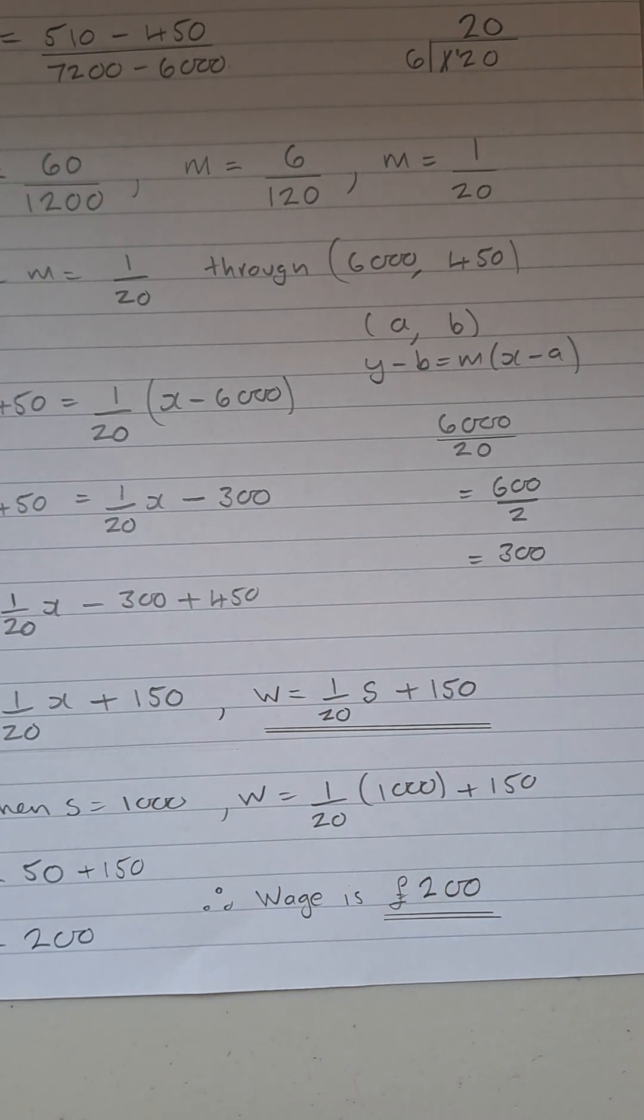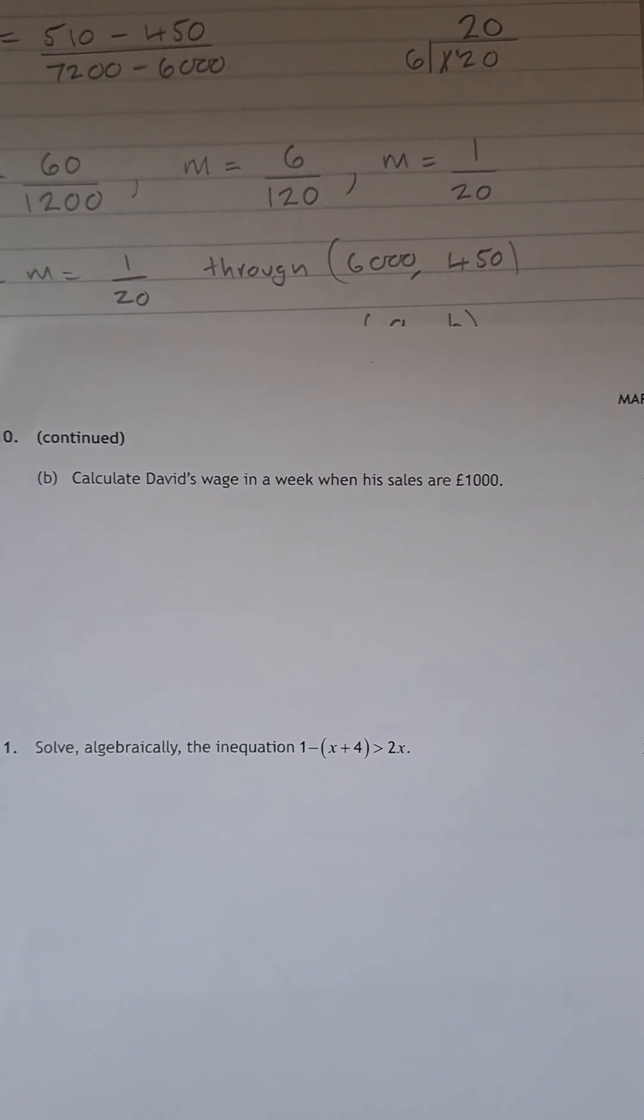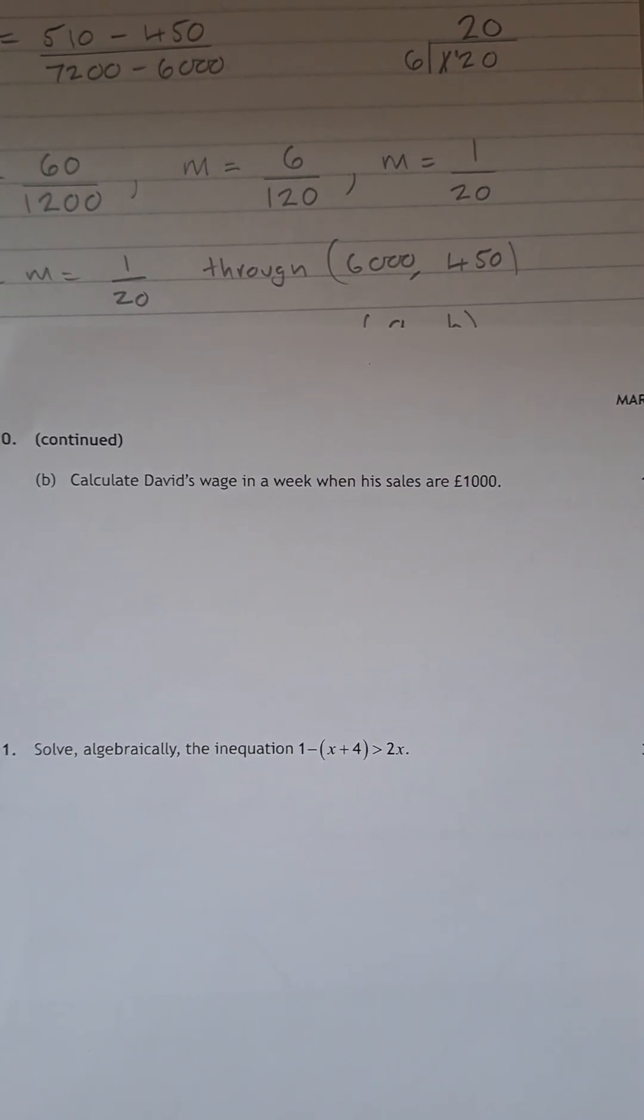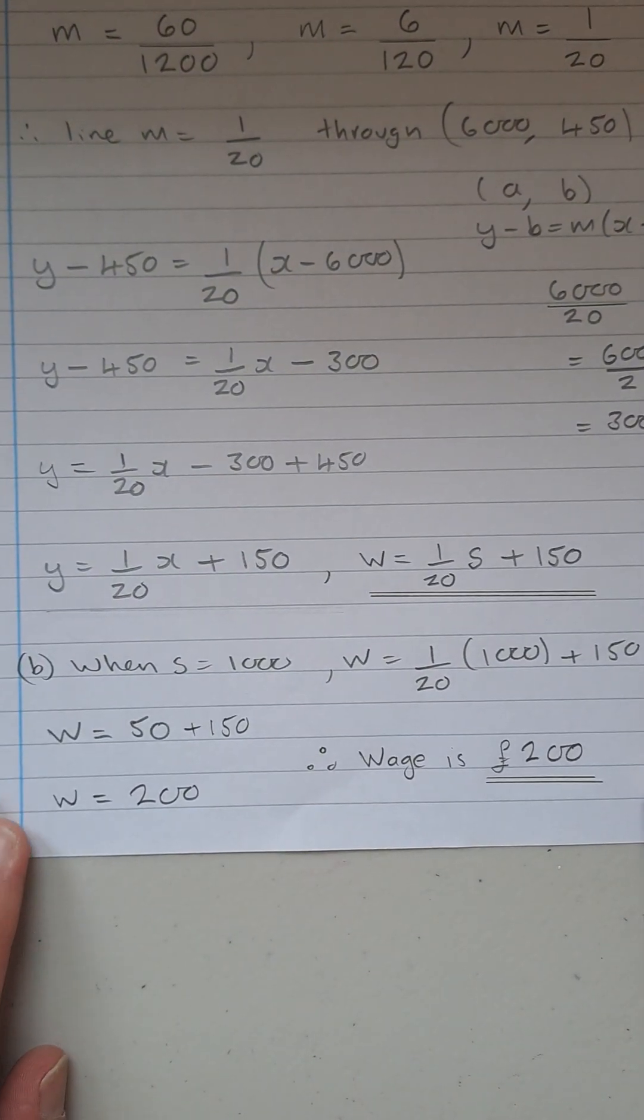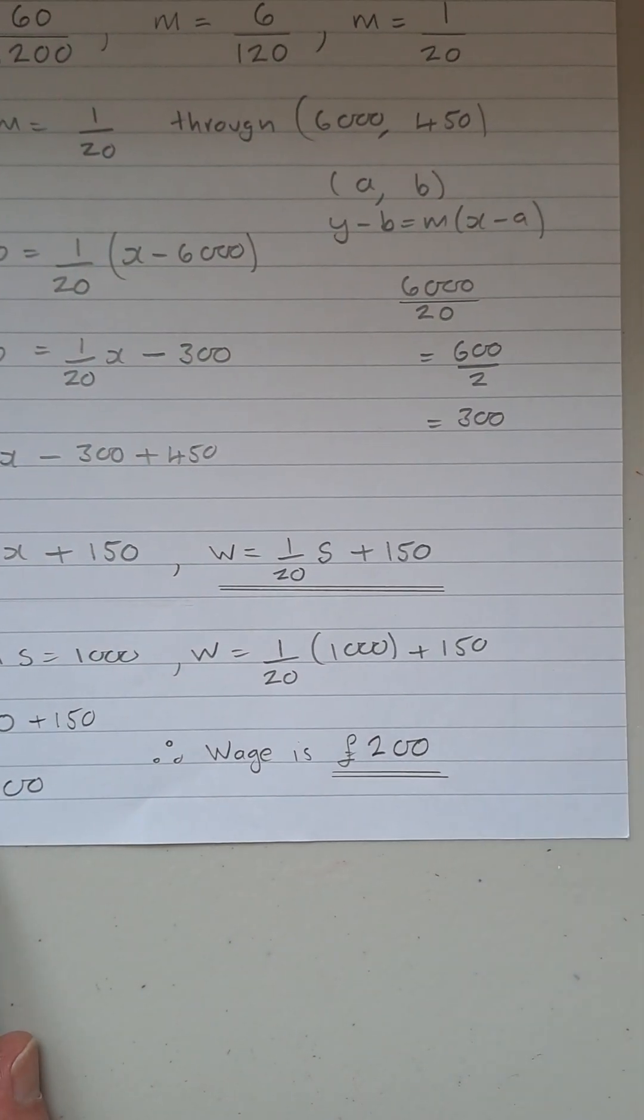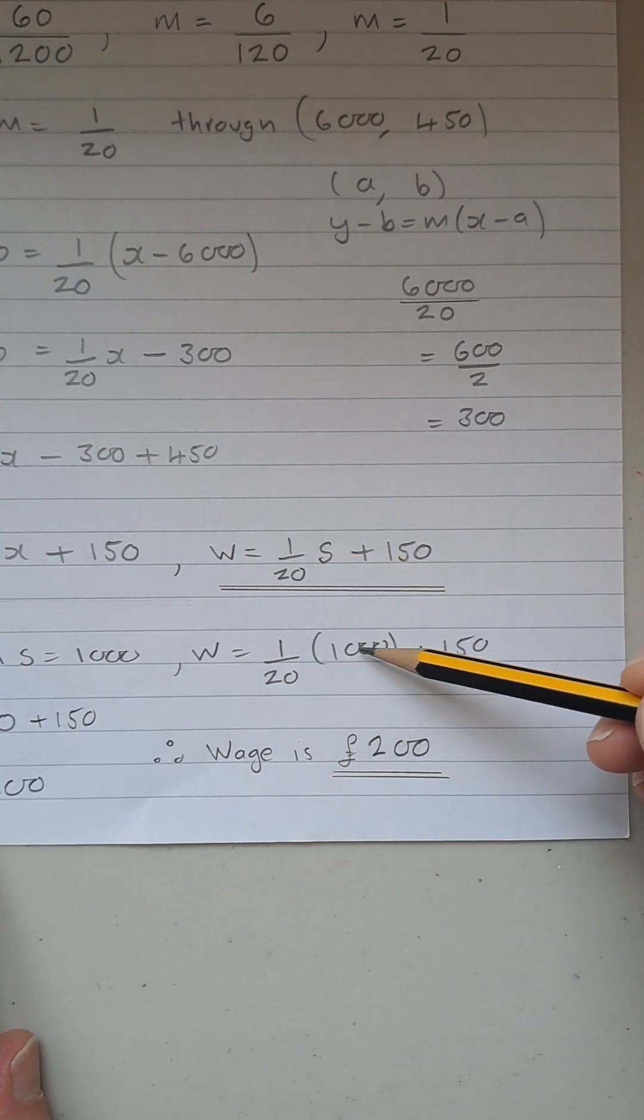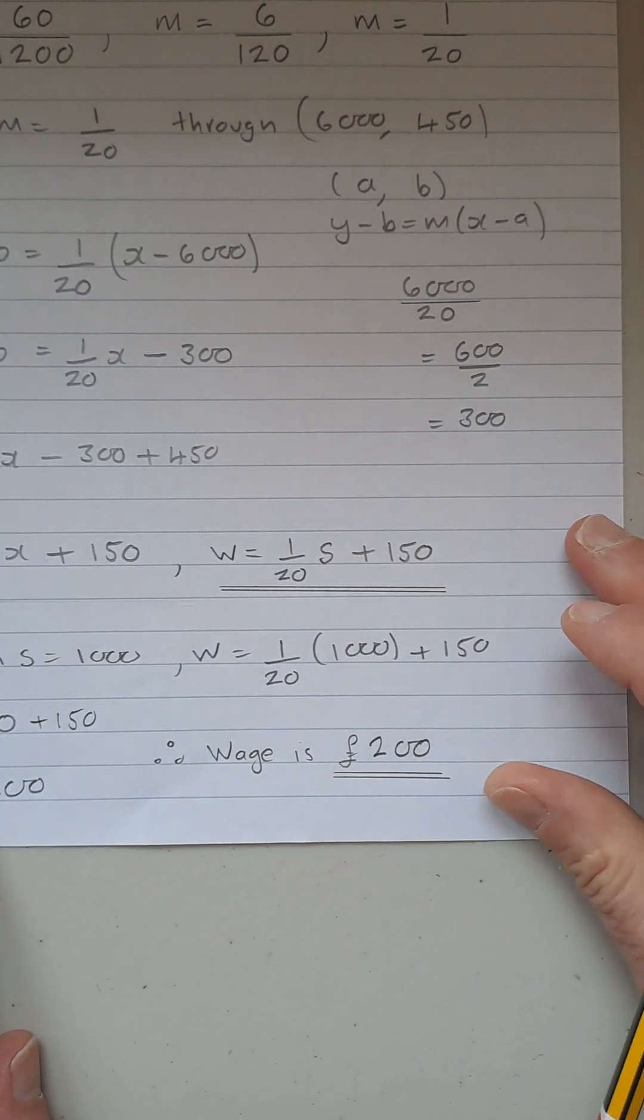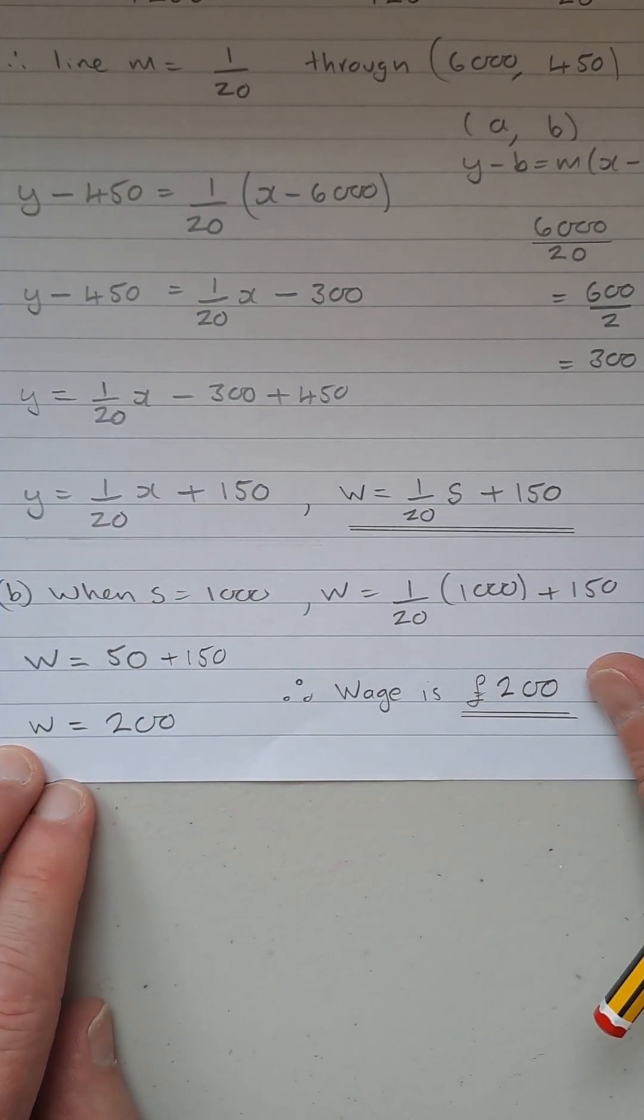Now, part B of the sum is, as you see it, for those of you who don't have the paper, calculate David's wage in a week when his sales were 1,000. So for this one here, when S is 1,000, well, the wage is 1 over 20 times S. So it's 1 over 20 times 1,000 plus 150.